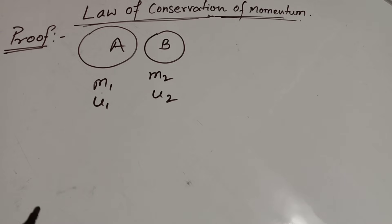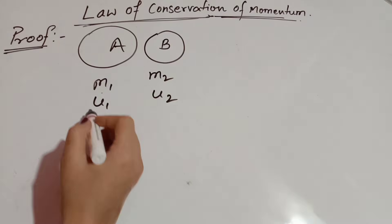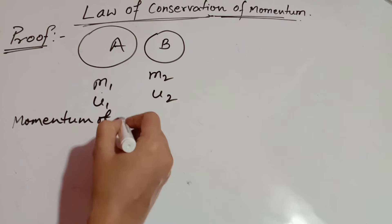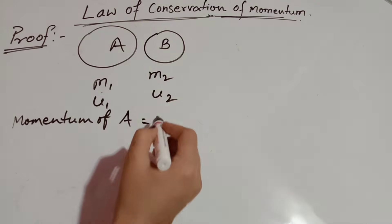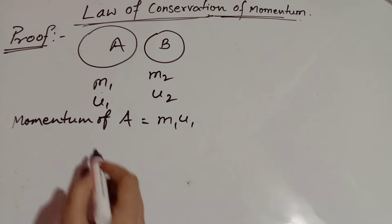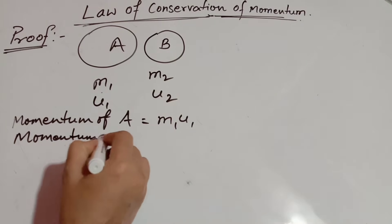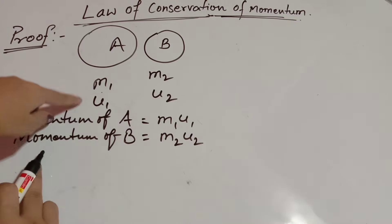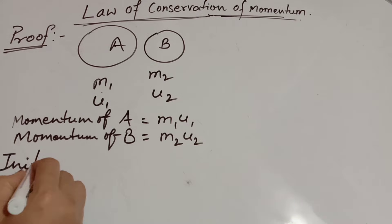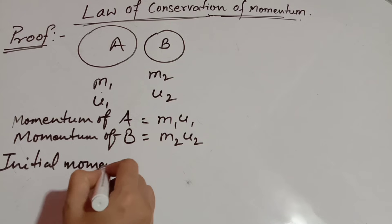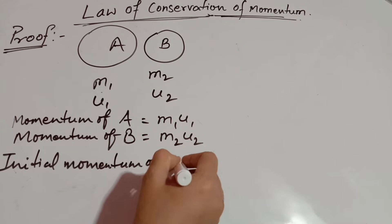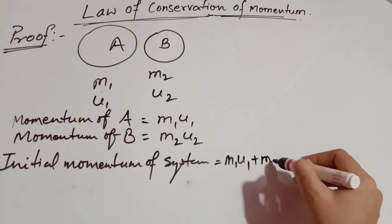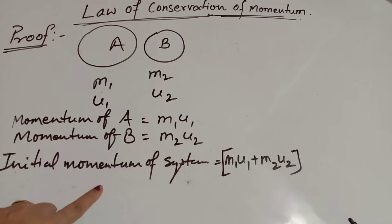The formula of momentum is equal to mass into velocity. The initial momentum of object A is M1 U1, and the momentum of object B is M2 U2, because momentum equals mass into velocity. So the total initial momentum of the system is equal to M1 U1 plus M2 U2.